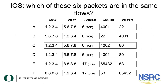Let's have a look at this example. The slide shows six packets — which of these six packets are in the same flows? Packet A: source address 1.2.3.4, destination 5.6.7.8, TCP protocol, source port 4001, destination port 22. Packet B: source 5.6.7.8, destination 1.2.3.4, TCP, source port 22, destination port 4001. You can notice that packet B is kind of a response — the reverse of packet A.